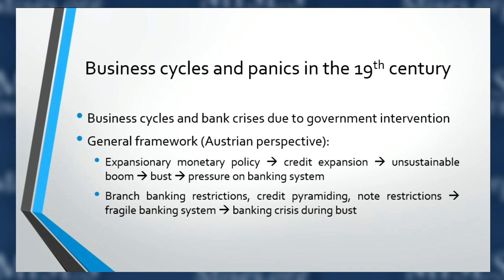Now let's go into a bit more theory. This is Mises University, after all. Business cycles and bank crises are due to government intervention. The general framework is Austrian business cycle theory. What causes a recession is some sort of expansionary monetary policy from a central bank or other government entity, which allows fractional reserve banks to engage in credit expansion. This artificially lowers interest rates and sets in motion an unsustainable boom.